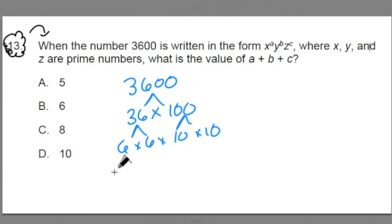For example, 6 here is made up of 2 times 3, another 2 times 3 here. 10 is made up of 2 times 5, another 2 times 5 here.